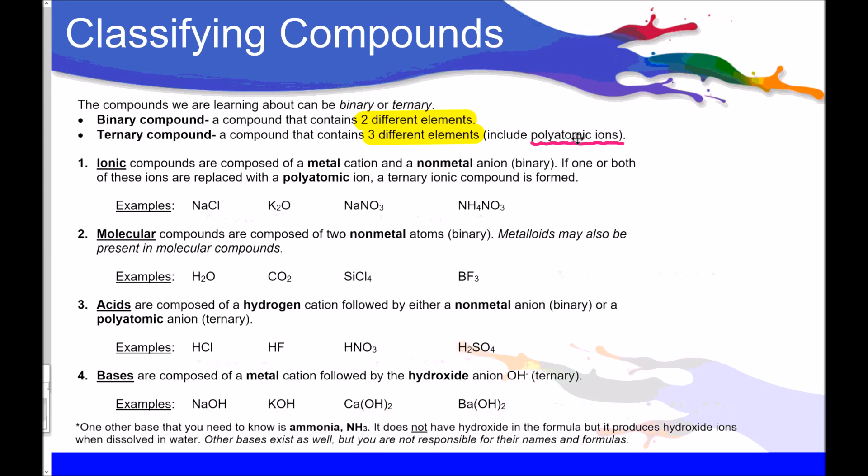Okay, moving on to our four different compounds, and we need to know about those four different compounds, and then to be able to distinguish if they are binary or ternary. Ionic compounds are composed of a metal cation and a nonmetal anion. That would be a binary ionic compound. If one or both of these ions are replaced with a polyatomic ion, that would be a ternary ionic compound. So here's some examples. We've got NaCl and K2O. So those are two elements that make that up. We've got metal, nonmetal, metal, nonmetal. So we would say that this is a binary ionic compound. Then we've got NaNO3 and NH4NO3. Both of these have polyatomic ions in them, so they would be ternary ionic compounds.